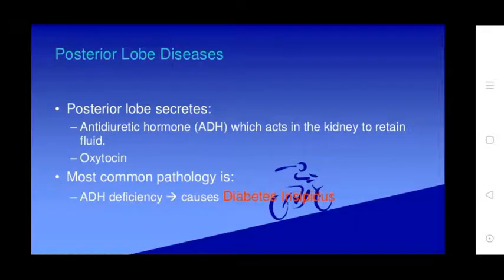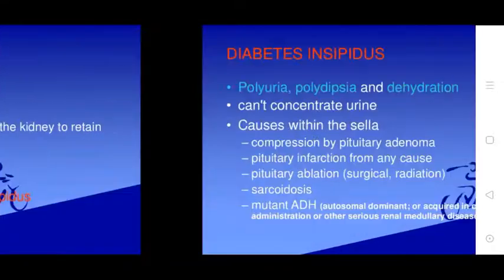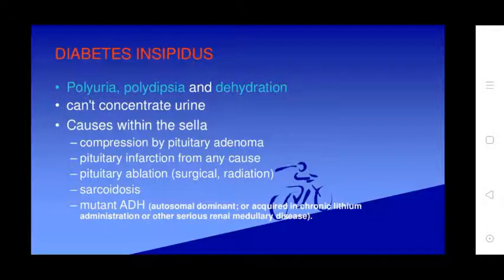The posterior lobe secretes antidiuretic hormone (ADH), which acts on the kidney to retain fluid, and oxytocin. The most common pathology is ADH deficiency, causing diabetes insipidus, with symptoms of polyuria, polydipsia, and high risk of dehydration as the body cannot concentrate urine. Causes include compression by pituitary adenoma, pituitary infarction, surgical radiation, psychosocial factors, mutant ADH, autosomal dominant forms, or chronic lithium administration.